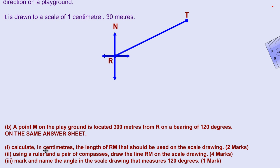They're asking us now in part one to calculate in centimeters the length of RM that should be used in the scale drawing, and that's an easy two marks. Now, as we had established in the previous video, based on the scale, every one centimeter equals 30 meters. But if you notice now, what they're saying is that the actual distance on the playground is 300 meters.